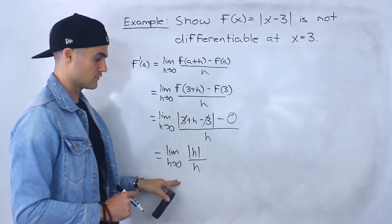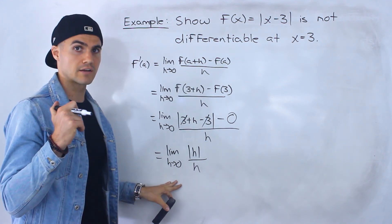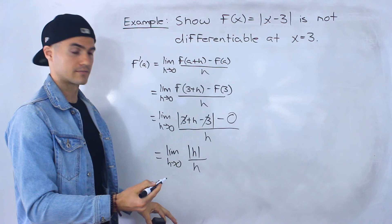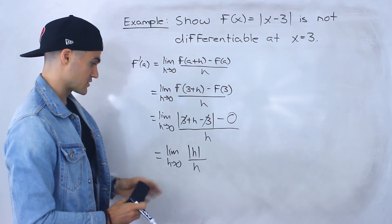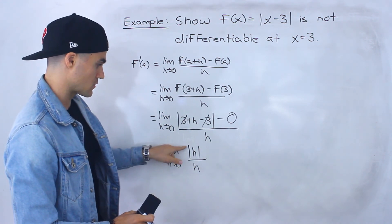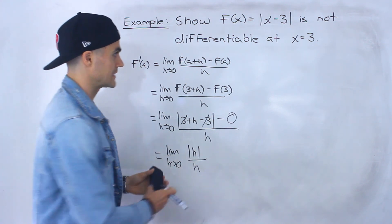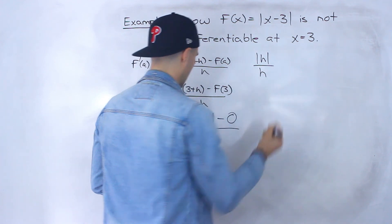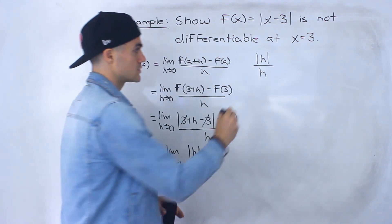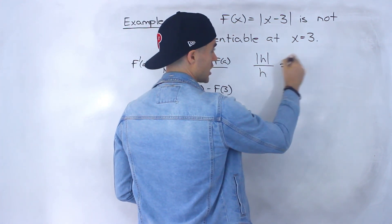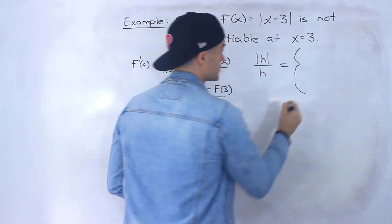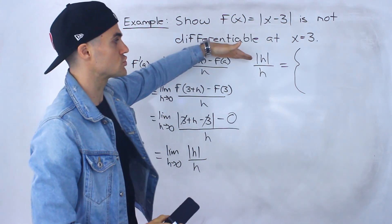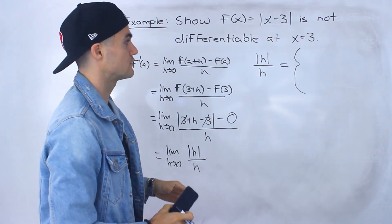Notice this limit is very similar to limits we've done previously when we talked about one-sided limits. To find the limit as h approaches 0 of absolute value of h over h, I'm going to graph it. To do that, I'm going to change this to a piecewise function, because any absolute value expression can always be rewritten as a piecewise function.